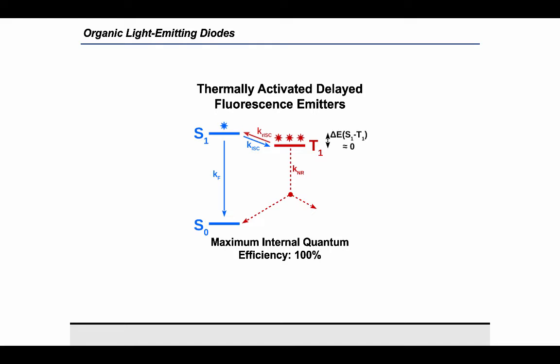Subsequently, light production takes place via fluorescence, allowing to achieve internal quantum efficiencies of 100%.